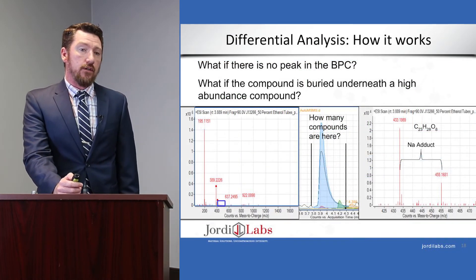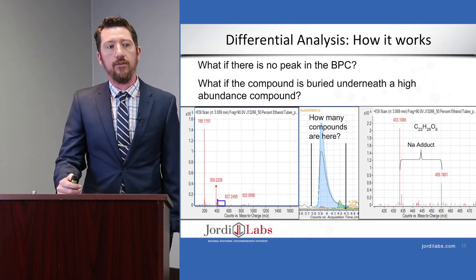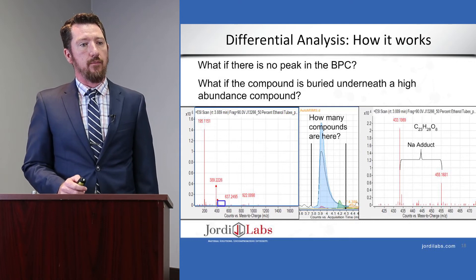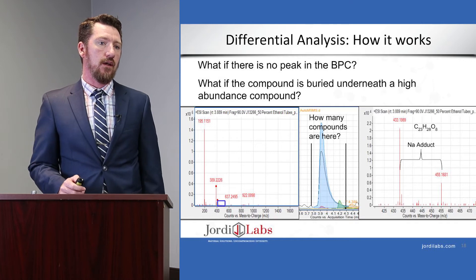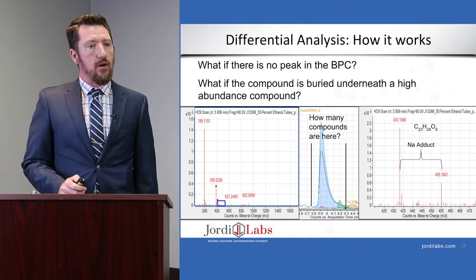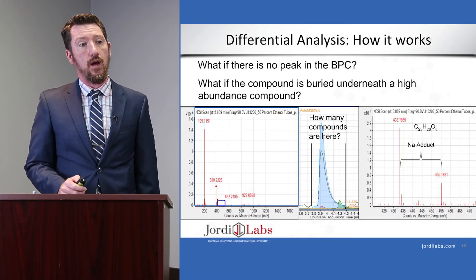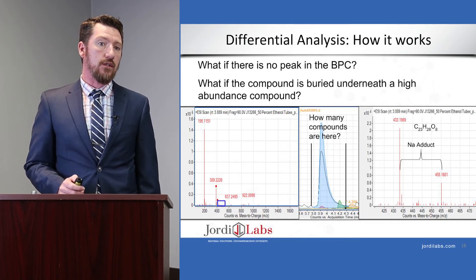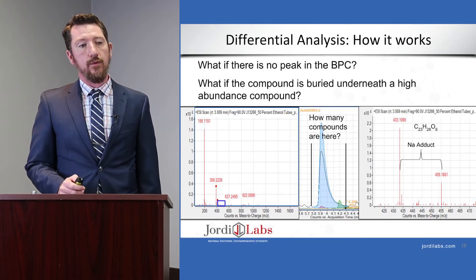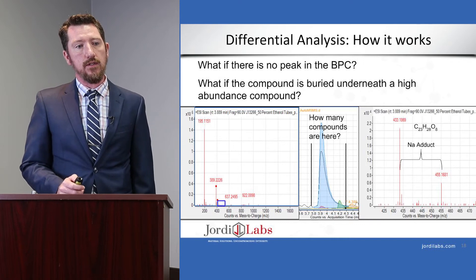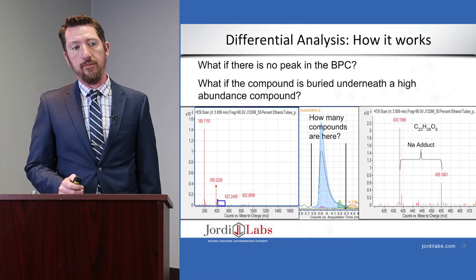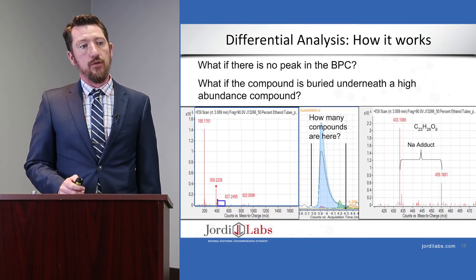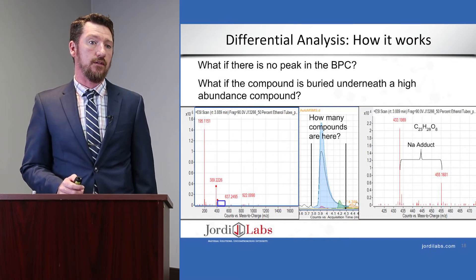That was a relatively simple case where we could clearly see a large peak in the BPC, but what if there isn't a peak in the base peak chromatogram? What if the compound is buried underneath something else? If we look at a peak in the middle and ask how many compounds are there, we can pull a mass spectrum and see two relatively intense ions. But if we zoom into the low abundance region — obscured by high abundance compounds — we can see a pair of adducts consistent with C23H28O8. Generating extracted ion chromatograms specific to those ions reveals a small chromatographic peak underneath the very large main component, which is very difficult to pick out manually.